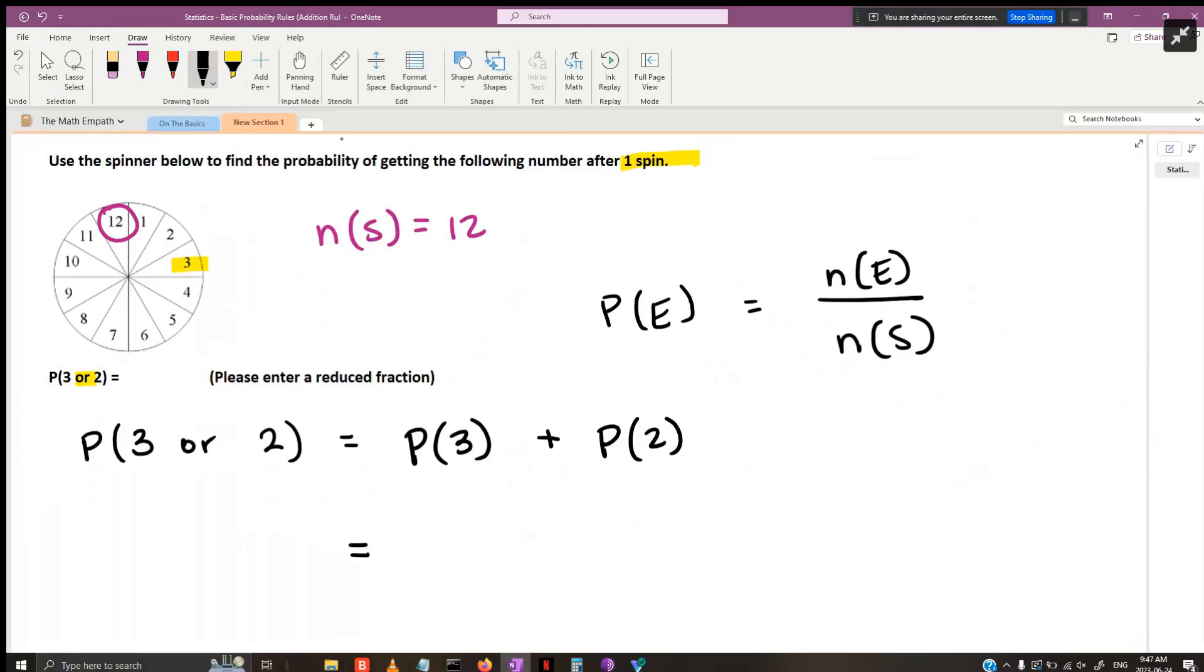With the probability of getting a three, since there's only one three, there's only one of this particular event that could appear. Therefore, the probability is one out of twelve, or 1/12. This goes back to classical probability—there's an equal chance for each type of event because each slice in the spinner is equal. It's the same thing for the two—there's only one two out of twelve, so 1/12 is also its probability.